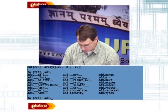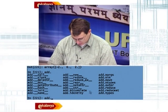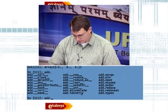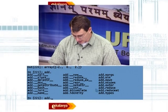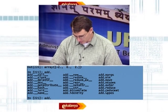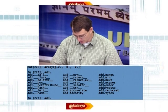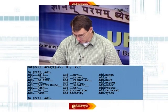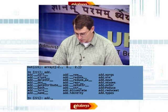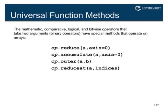If we look here, there are all these strange little methods, and I'm going to talk about four of them: the accumulate method, the reduce method, reduceat — we won't talk about that too much — and outer. Those four methods are special methods available on these operations.